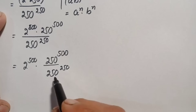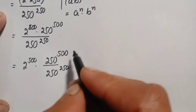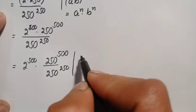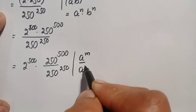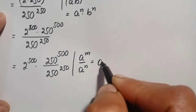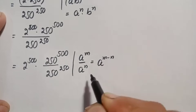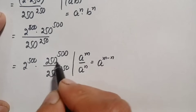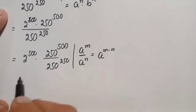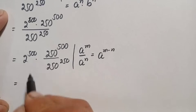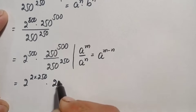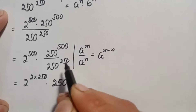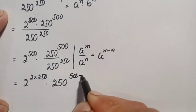These two numbers have the same base, so here we will use the same-base exponential identity: a raised to power m divided by a raised to power n, which can also be written as a raised to power m minus n. So using this identity, we write this once and subtract the powers, giving 2 raised to power 500, which we can write as 2 times 250.